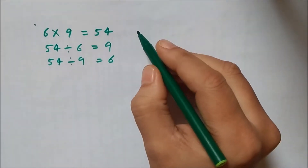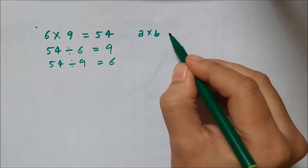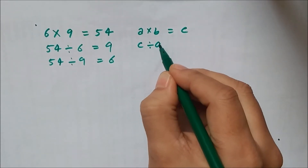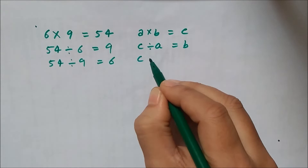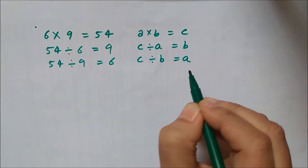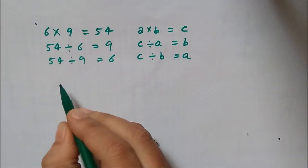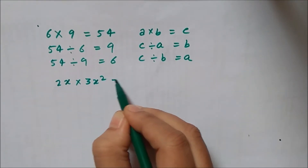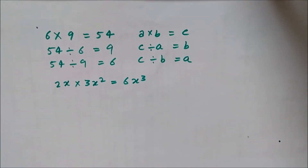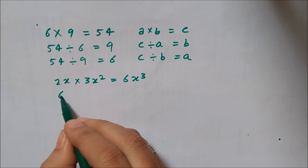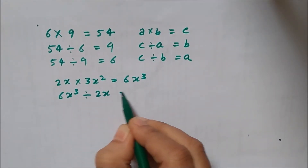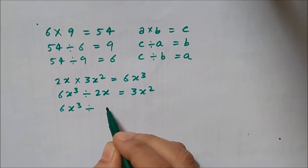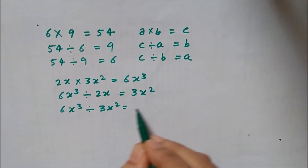Similarly, for algebraic expressions, if a into b is equal to c, then c divided by a will be equal to b, or c divided by b equals a. For example, 2x into 3x squared equals 6x cubed. So 6x cubed divided by 2x equals 3x squared, and 6x cubed divided by 3x squared equals 2x.